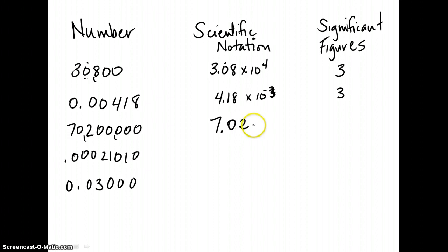All right. So in that case, you write 10 to the 1, 2, 3, 4, 5, 6, 7, 10 to the seventh power. That means that we have three significant figures.